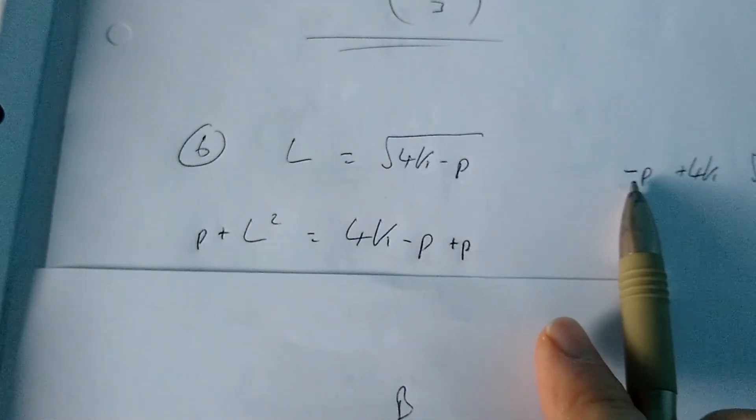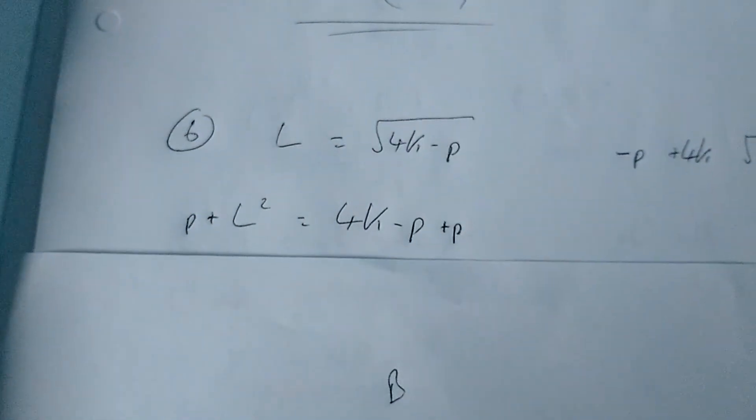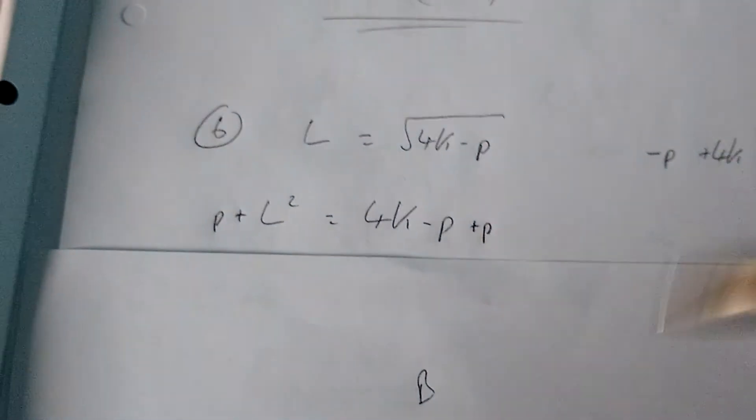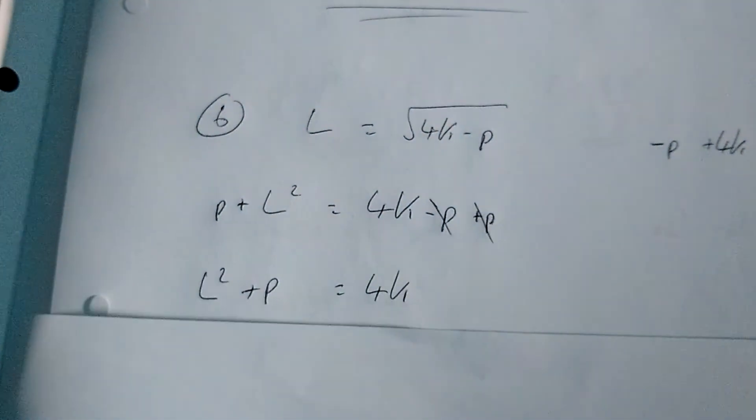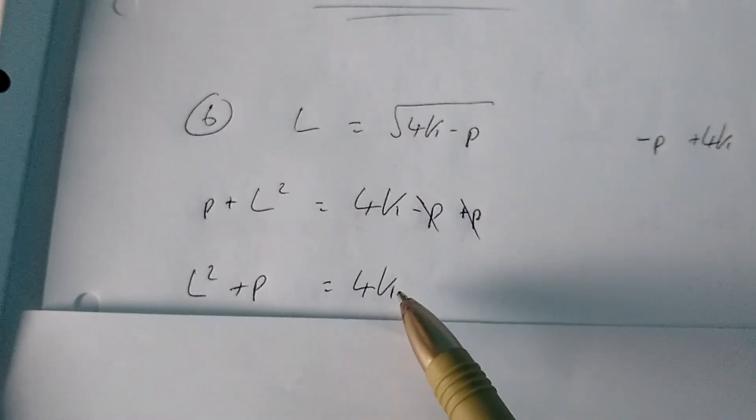But if I can avoid ending with minus p at the end, it just works out so much nicer. So that's why I've chosen to do that step there. So minus p plus p is zero. So we're left with l squared plus p equals 4k.